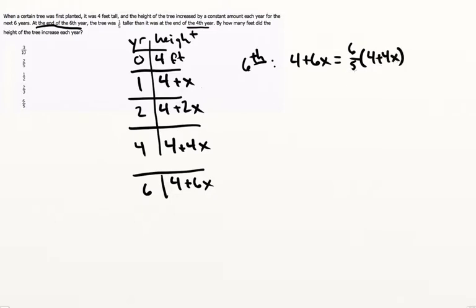The next step here, I would get rid of this fraction of the five on the bottom, I just multiply everything by five, both sides. So take this, multiply it by five as well. So that's going to be 20 plus 30x is equal to six times four plus four x, just to get rid of the fraction as quickly as possible.